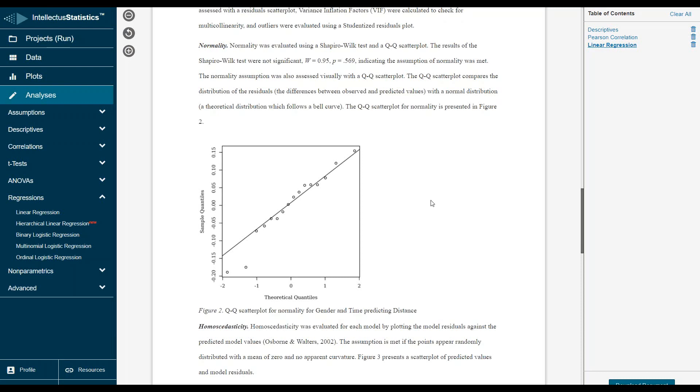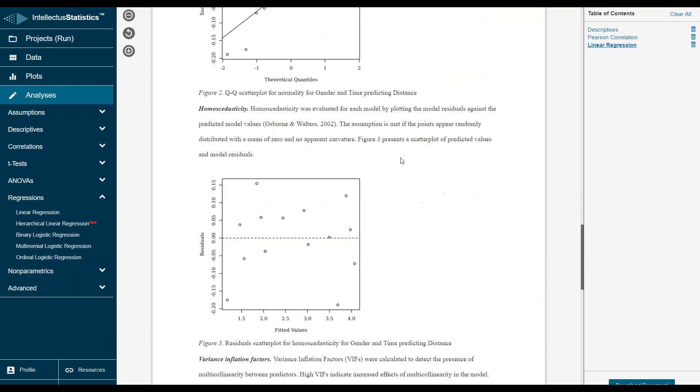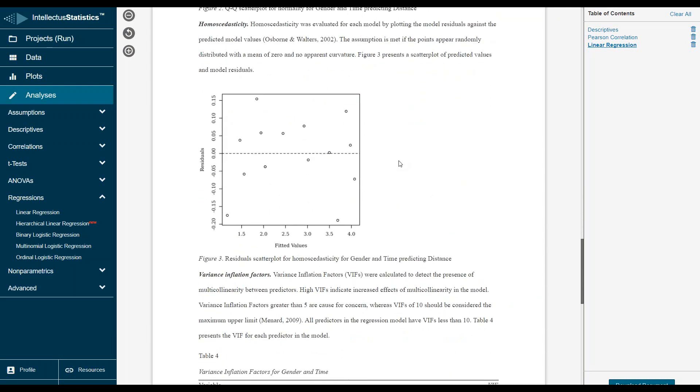Basically you want these dots to be close to the line. The next assumption is homoscedasticity. Here, if the assumption is met, the points appear randomly distributed around this zero, which it kind of does.